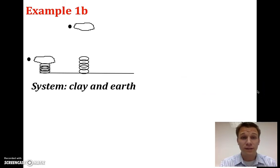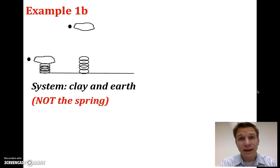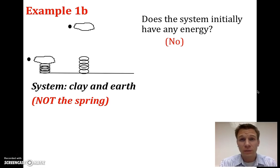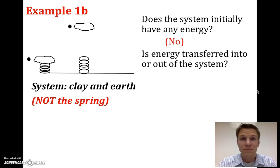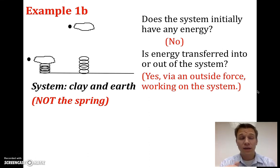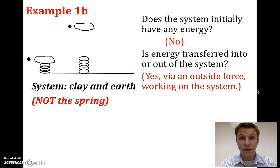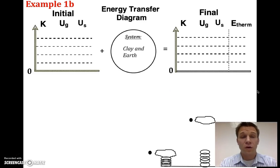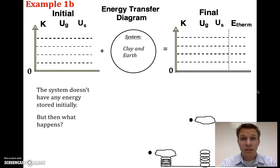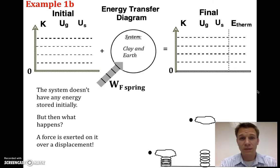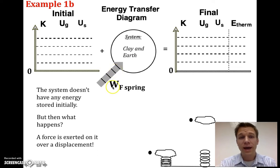Example 1B is the same scenario with a different system: clay and earth only — the spring is not in the system. Does the system initially have energy? No, because the spring is not included. Is energy transferred into the system? Yes — the spring pushes up on the clay over a displacement, transferring energy into the system. In the LOL diagram, the first L is empty, and in the O section we show work done by the force of the spring, which I represented as four units going in.